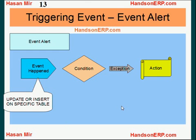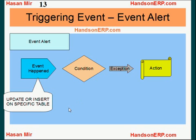What are the triggering events for Event Alert and Periodic Alert? An Event Alert is triggered as soon as the event has taken place and the condition has been evaluated as true, meaning there is an exception and the action is executed. You define your triggering event as an update or insert on a specific table. For example, if we want to be notified when a new user is created, we define the triggering event as an insert on the FND_USER table. If we want to be notified when existing users are modified, we create the triggering event as an update on the FND_USER table. To be notified when an invoice is entered with an unusually high dollar amount, you create a triggering event as an insert on the AP_INVOICES_ALL table, which stores invoice data.